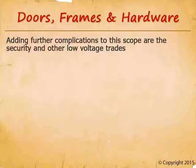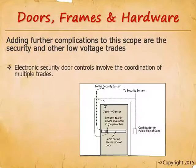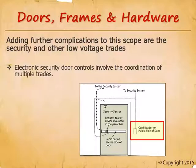Electronic security door controls involve coordination of multiple trades: the low-voltage security subcontractor, the electrician, and the door subcontractor. On the public side of a security door there's typically a card reader, which does two things when you swipe your card: it unlocks the door and signals the security system that this is a lawful opening, preventing an alarm from sounding.